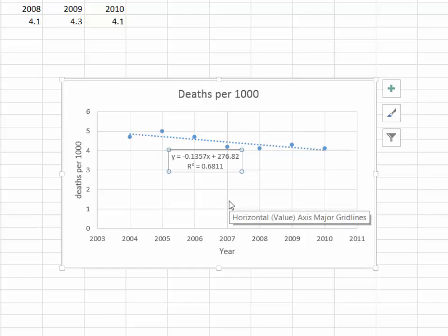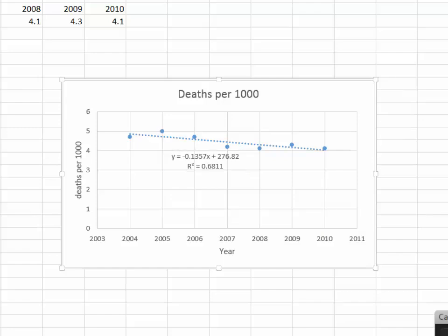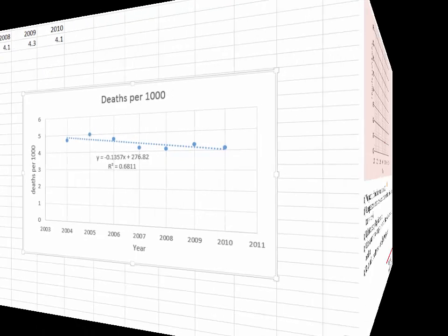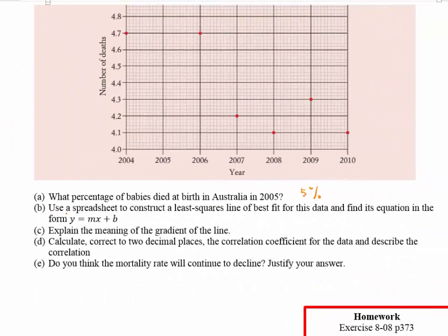Going back to answering the questions: Part B says use a spreadsheet to find the equation in the form y = mx + b. From the Excel spreadsheet you saw how easy it was. The equation is y = -0.1357x + 276.82, which makes sense because we have a negative line, with 276.82 as the y-intercept.